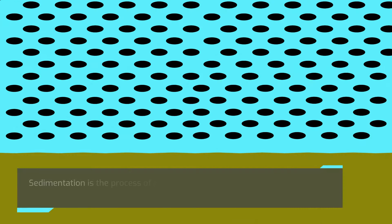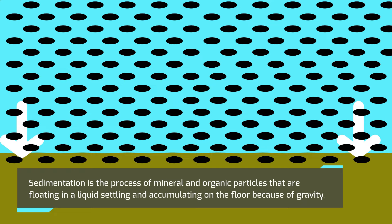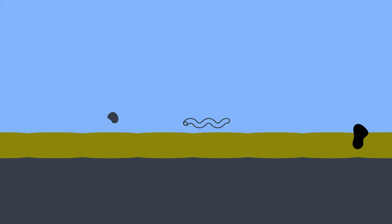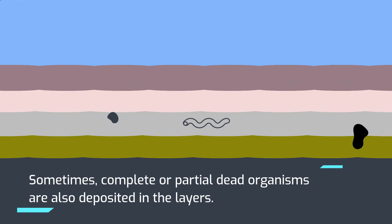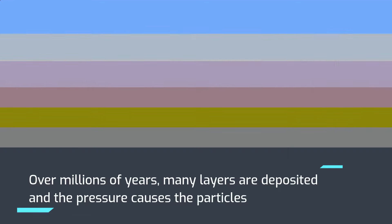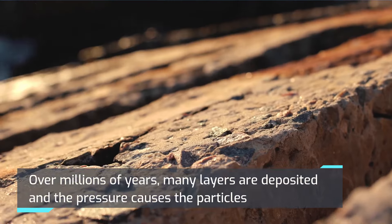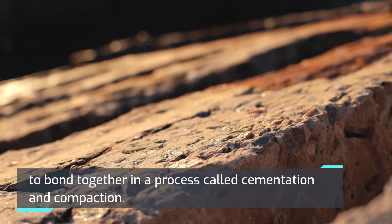Sedimentation is the process of mineral and organic particles floating in liquid settling and accumulating on the floor because of gravity. Sometimes complete or partial dead organisms are also deposited in the layers. Over millions of years, many layers are deposited and the pressure causes the particles to bond together in a process called cementation.